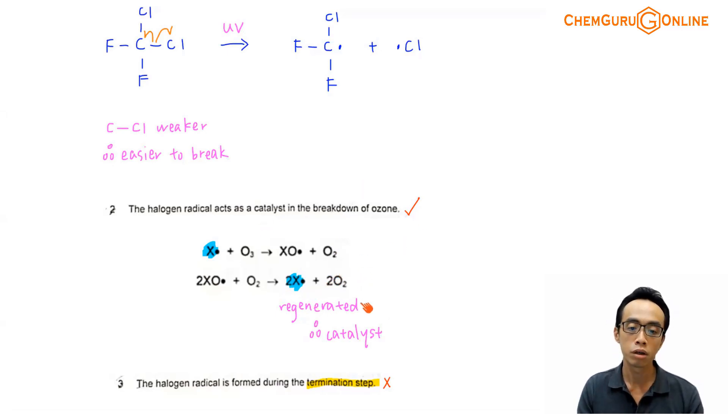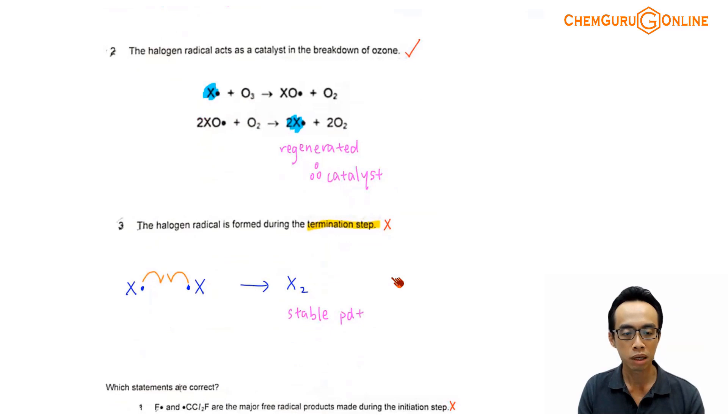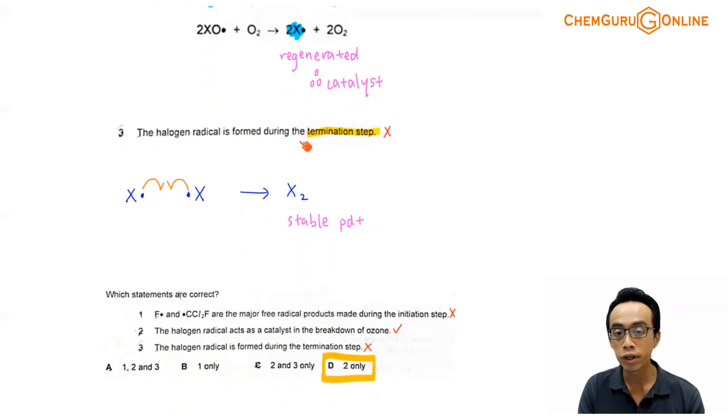How about step number three? Now step number three, it says that the halogen radical is formed during the termination step. Now termination step, what we have learned under free radical substitution when we describe the mechanism, we know that termination step is when two radicals meet each other and they form a stable bond, covalent bond between them and we form a stable product. So a termination step usually is involving two radicals coming together to form a stable compound. The product shouldn't be a radical and therefore if statement three says that the halogen radical is formed during the termination step, then it shouldn't be correct. So statement number three is false.